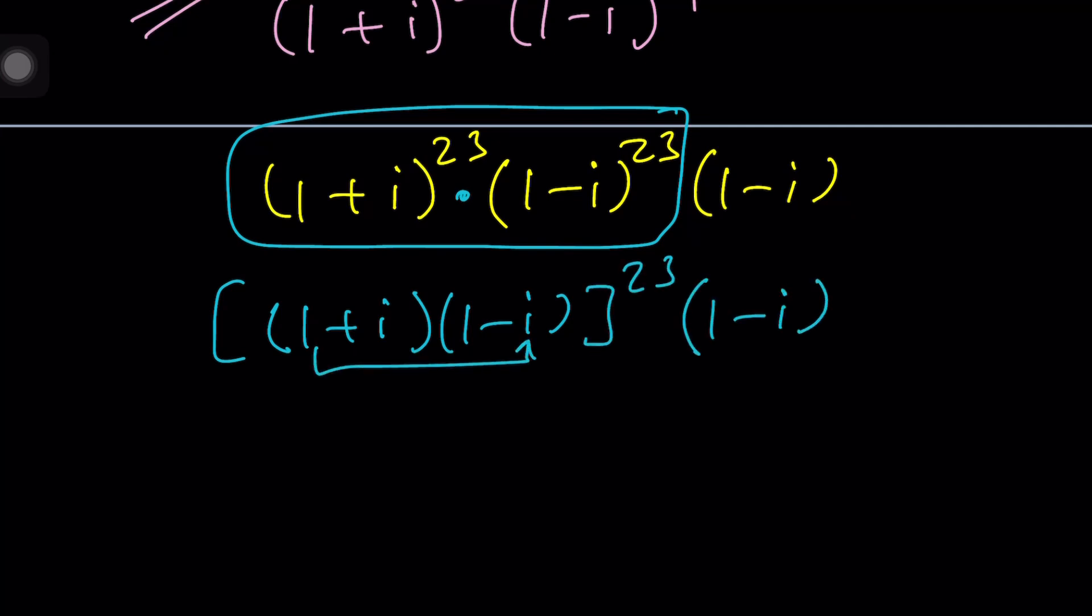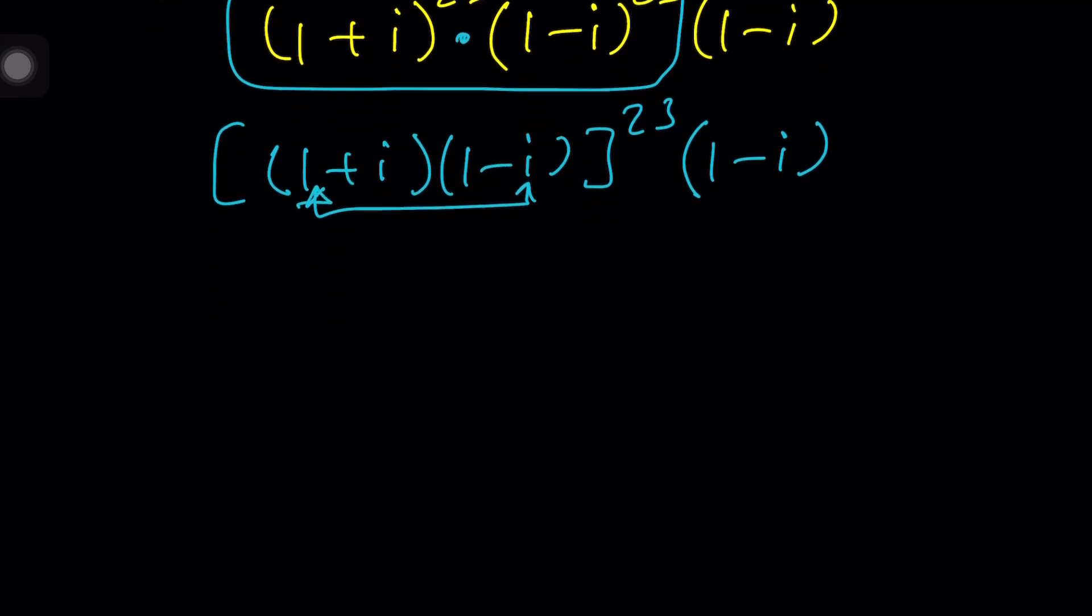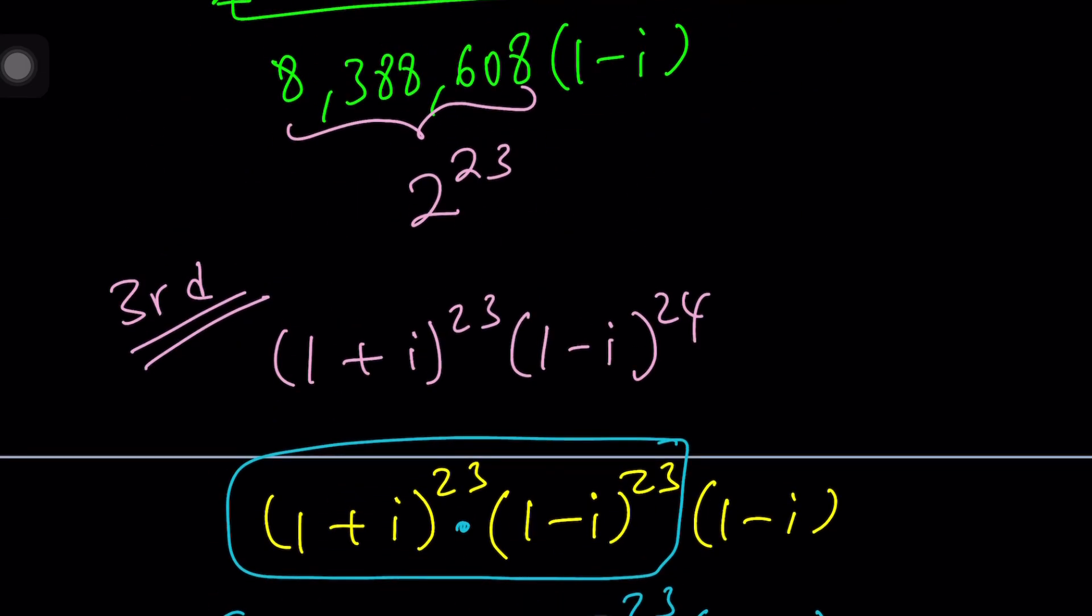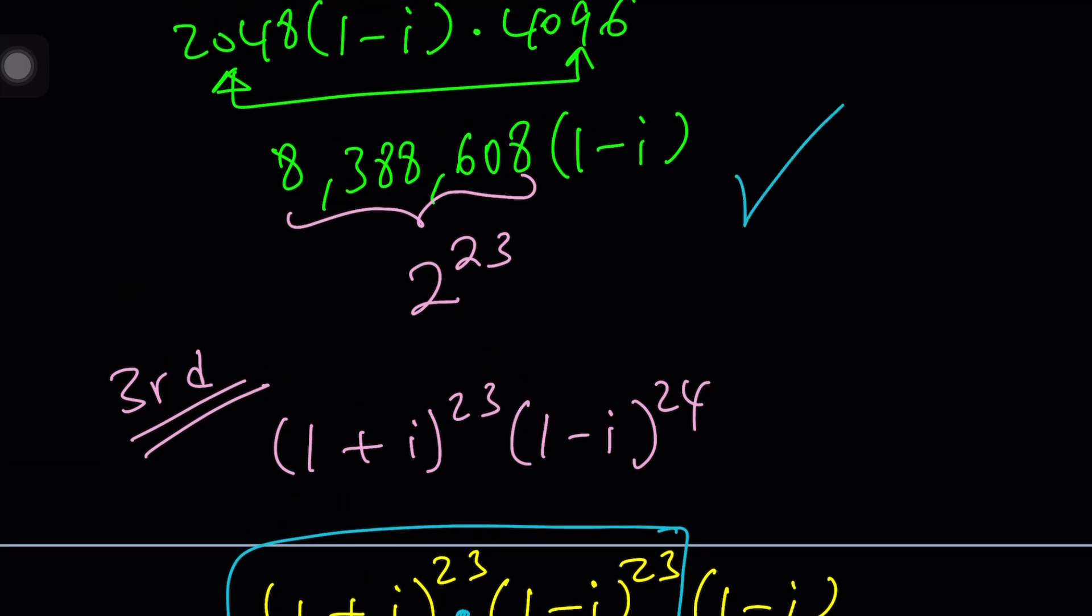But notice that from sum of two squares, this is equal to 2: 1 squared plus 1 squared. So it's 2 to the power 23 times (1 - i). And guess what? It's the exact same thing that we found before.